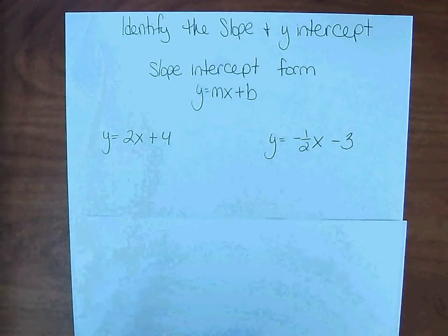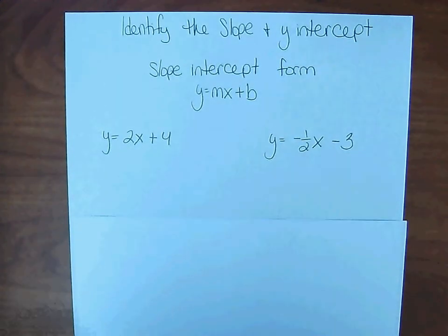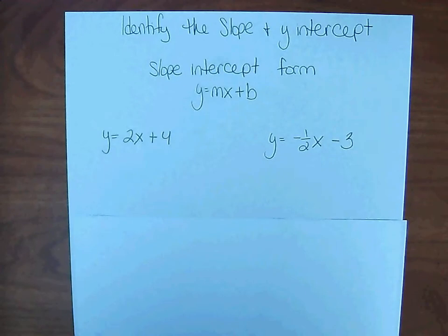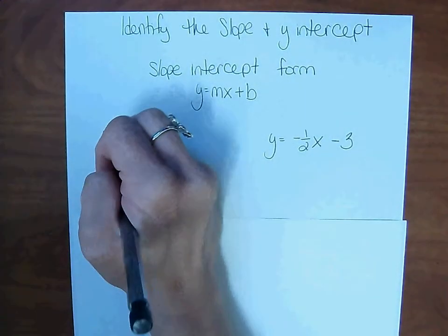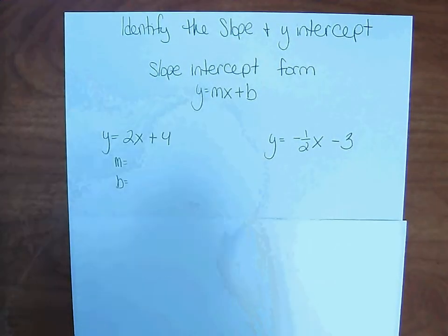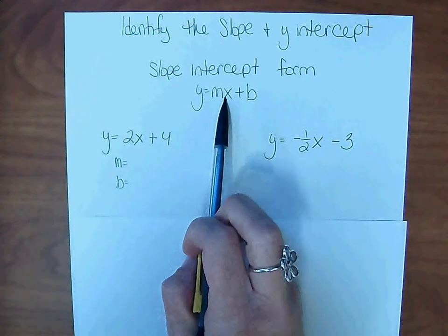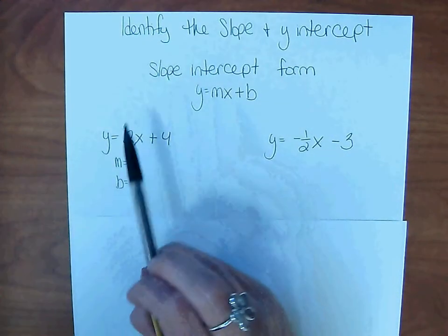So the first equation, y = 2x + 4, is in slope-intercept form. We're going to write m = and b =. Slope is the number that's being multiplied by x. So here, the slope is 2.